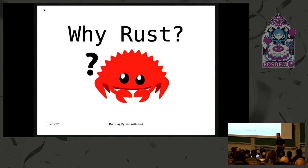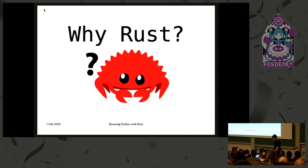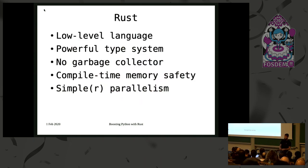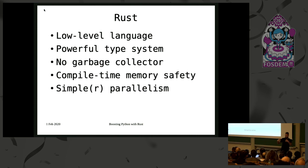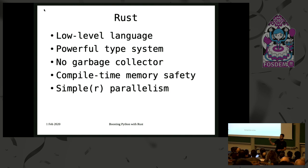So why did we choose Rust? We already had about 40,000 lines of C code, so why move to Rust? Rust is a low-level language with a very powerful type system. It has no garbage collector, which is quite important when you're trying to interface two languages — if both have garbage collectors, you run into some very tricky problems. It has a lot of compile-time memory safety and allows for simpler parallelism than writing the same code in C or Python.